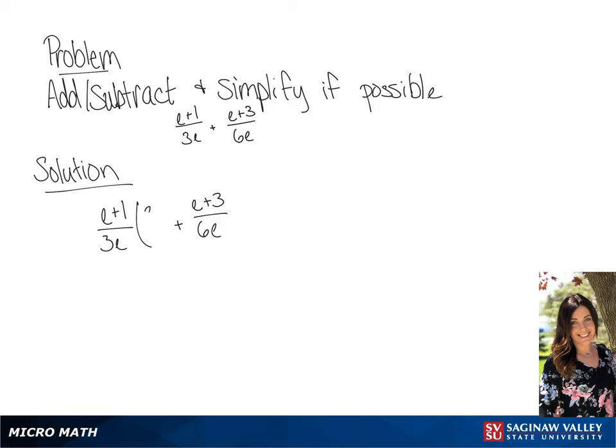Our common denominator in this case is going to be 6e, so we're going to multiply the first fraction by 2 over 2.